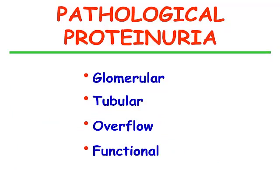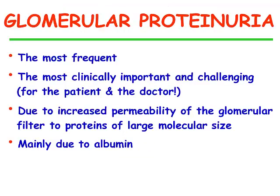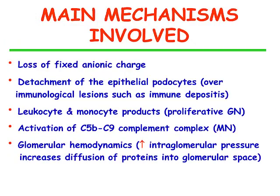As to pathological proteinuria, we know that we have glomerular proteinuria, tubular proteinuria, overflow proteinuria, and functional proteinuria. Glomerular proteinuria is the most frequent and the most clinically relevant and challenging for both the patient and the doctor. It is due to increased permeability of the glomerular filter to proteins of large molecular size. It always contains albumin, but not only that. It is due to many mechanisms, the main of which are listed here.